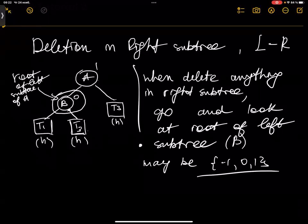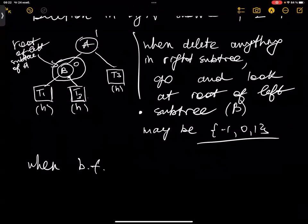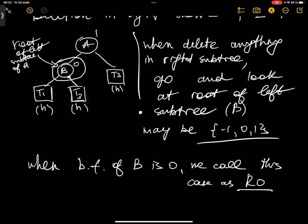We start with the case when B, the root of the left subtree, has balancing factor zero. We call this case R0. R0 means we are deleting from the right subtree (R), and the balancing factor of B is zero. We're going to consider three cases: when balancing factor is 0, when it's -1, and when it's 1.